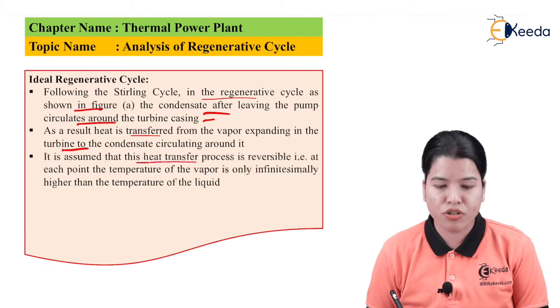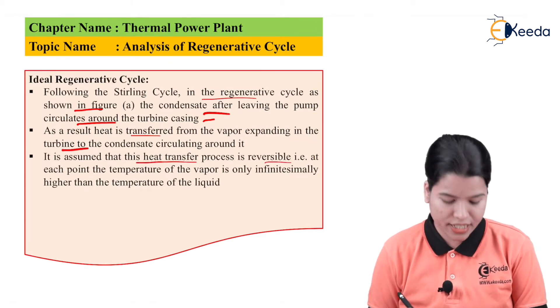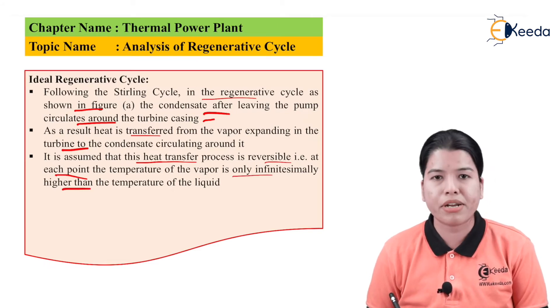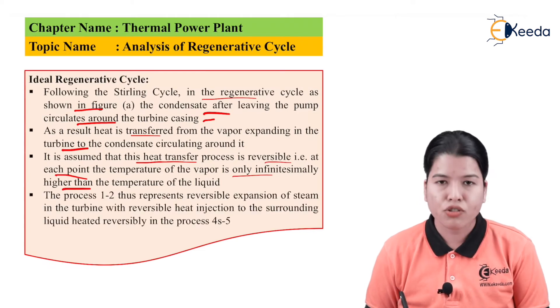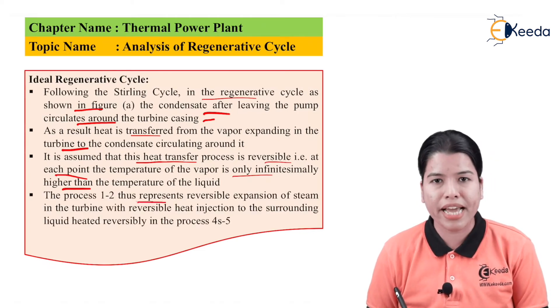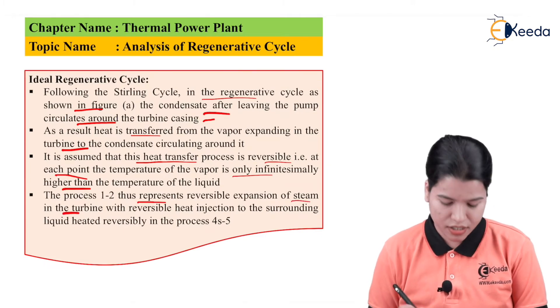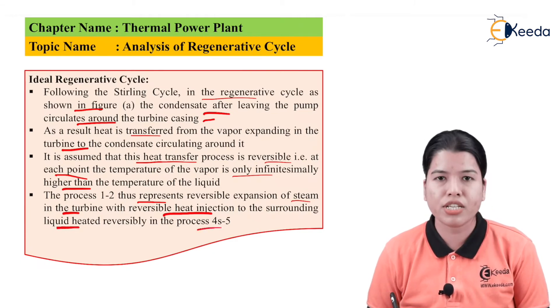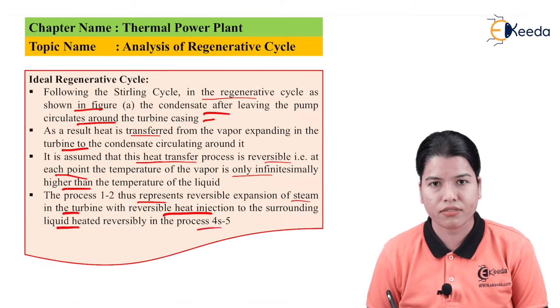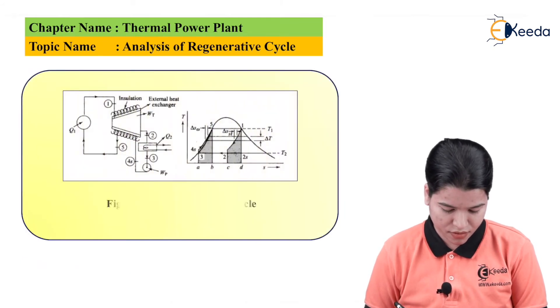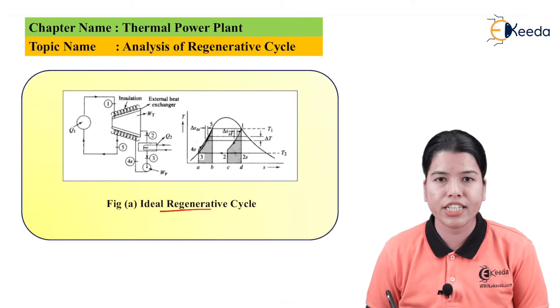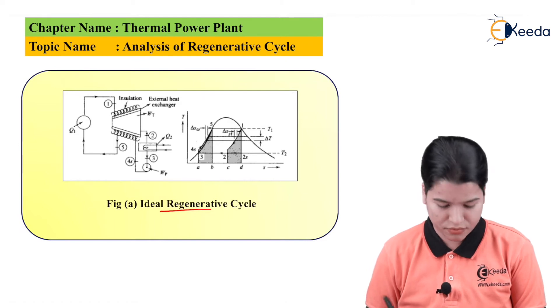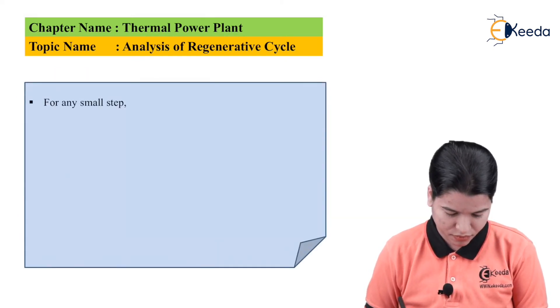Also, it is assumed that this heat transfer process is reversible, that is, at each point the temperature of the vapor is only infinitesimally higher than the temperature of the liquid. The process 1-2 thus represents the reversible expansion of the steam in the turbine with reversible heat injection to the surrounding liquid, which is heated reversibly by the process 4s to 5. Here the figure shows ideal regenerative cycle in which the heat can be again utilized to generate the steam.